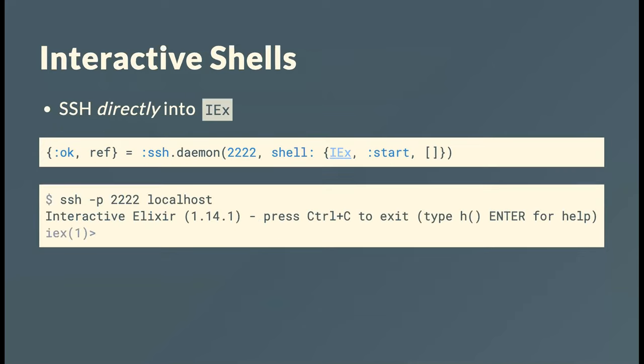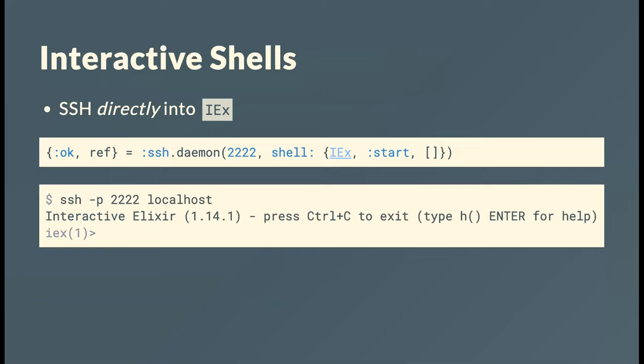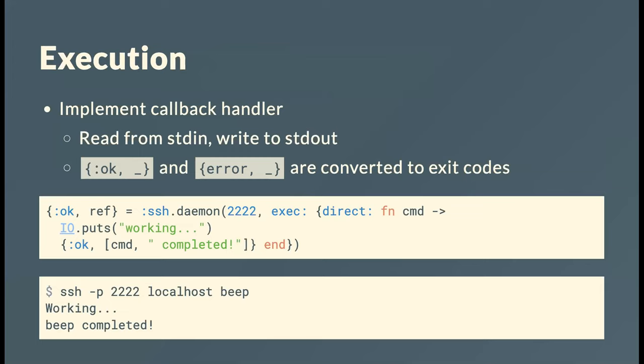The first cool thing you can do is turn SSH off completely on the box and just open a daemon in the Erlang VM. You just say you want a daemon listening on port 2222 to disambiguate, and provide the shell parameter. When you SSH into localhost, you're dropped immediately inside the process over a secure channel into the IEx shell within your running virtual machine. I think that's pretty cool.